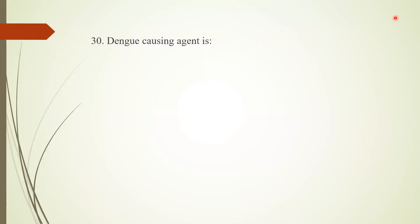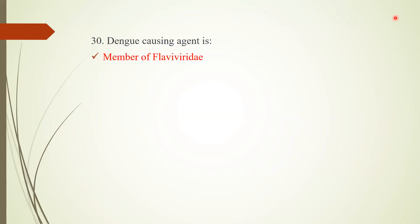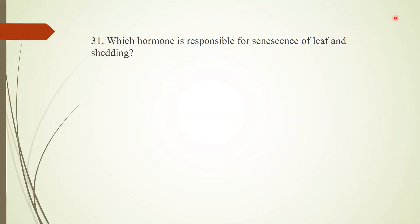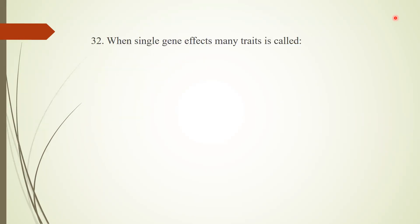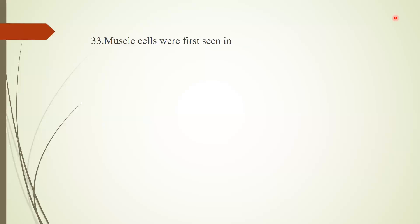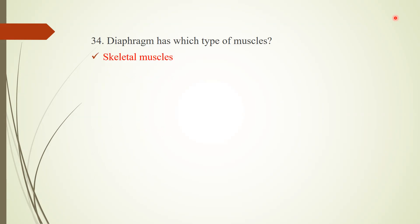Question 29: The anther wall consists of how many layers? Answer: four layers. Question 30: Dengue-causing agent is a mosquito that is a member of the Flaviviridae. Question 31: Which hormone is responsible for the senescence of leaf and shedding? Answer: abscisic acid. Question 32: When a single gene affects many traits, this phenomenon is called pleiotropy.